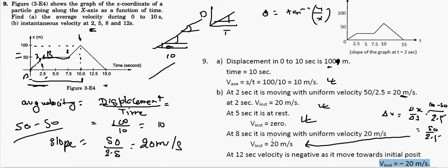For t = 12 seconds, the graph is in the decreasing section — the particle is moving back toward its initial position, so the velocity is negative. The segment from t = 10 to t = 12.5 has a height of 50 meters and a base of 2.5 seconds, so 50 divided by 2.5 = 20. The instantaneous velocity at t = 12 seconds is −20 m/s.